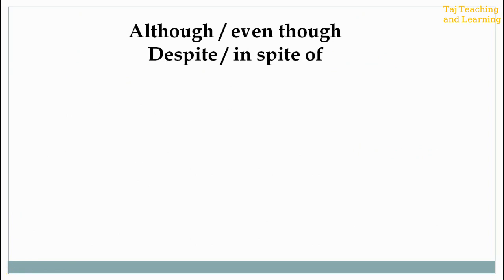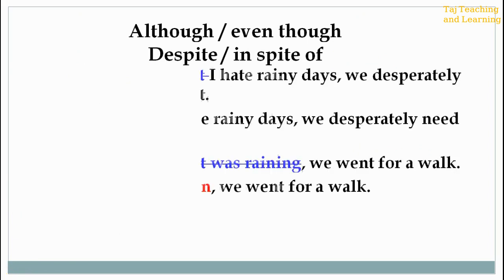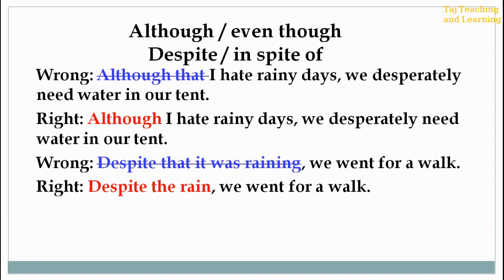Although, even although, even though, despite, in spite of — note: after these connectors, you don't need to repeat the subject. Look at the right and wrong sentences. Wrong: 'Although that I hate rainy day, we desperately need water in our tent.' Correct: 'Although I hate rainy day, we desperately need water in our tent.' Similarly, there are other examples — look at them.